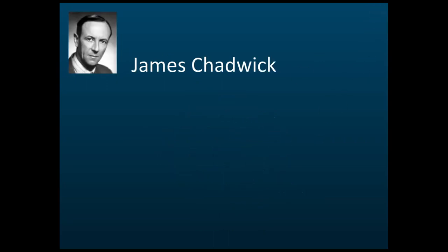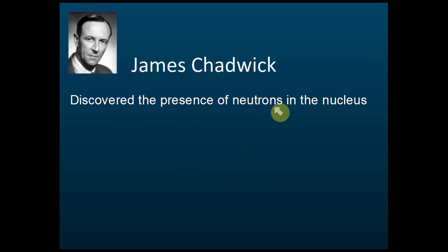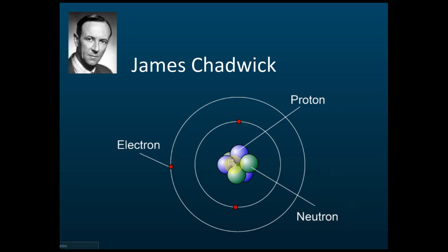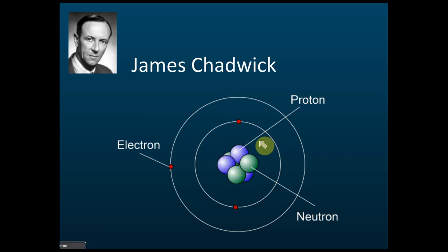James Chadwick discovered neutrons. He found that the neutron, like the proton, is located inside the nucleus. More than 99% of the mass is concentrated at the nucleus. James Chadwick found that inside the nucleus there is another particle called the neutron. The rest of the model is the same as Niels Bohr's — there is a nucleus, and electrons move around the nucleus in fixed orbits.